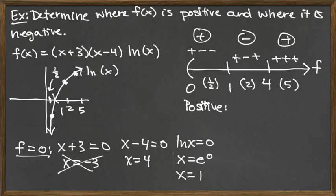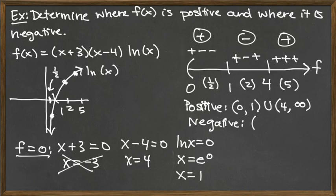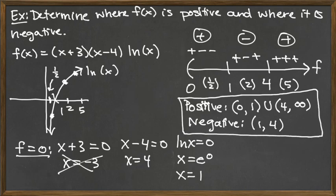So we've got positive starting this time not at negative infinity, but at 0. We don't include 0. 0 to 1 is positive, and then we've got 4 to infinity. And then we've got negative in between, so that would be between 1 and 4. Notice none of my test values ever land as endpoints of these intervals. Only the places that we got for where the function is 0 or undefined, those are the only places that land in the endpoints of these intervals.